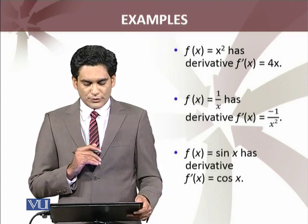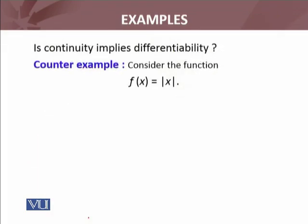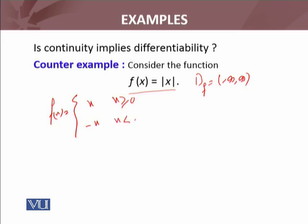I will discuss this function. Consider the function f(x) = |x|, and it is defined on the complete real number system, the extended real number system from minus infinity to infinity. The definition of f is: x when x ≥ 0, and -x when x < 0. Now this function is continuous.